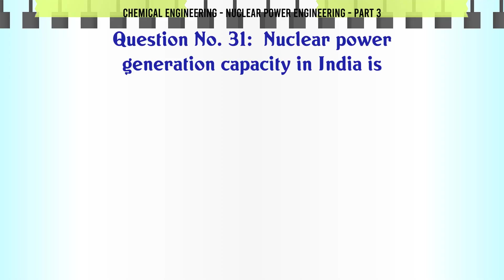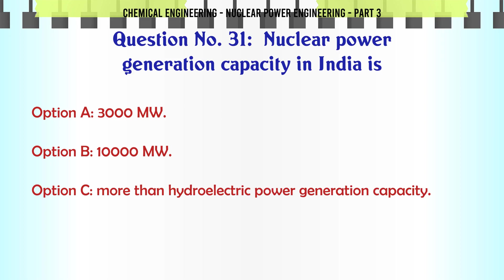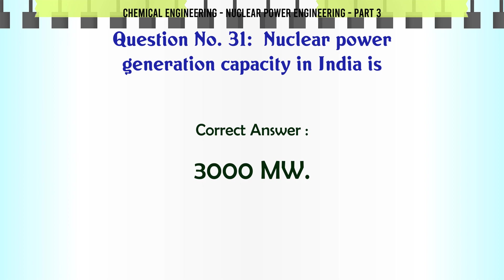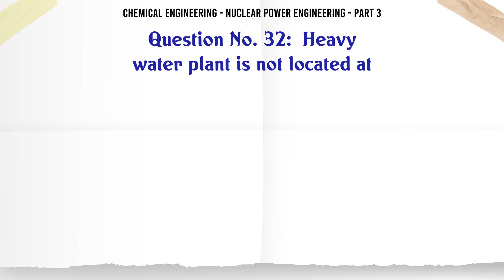Nuclear power generation capacity in India is 3000 MW. The correct answer is 3000 MW.